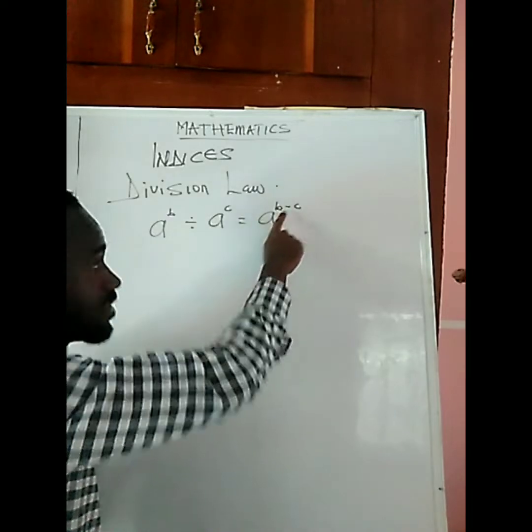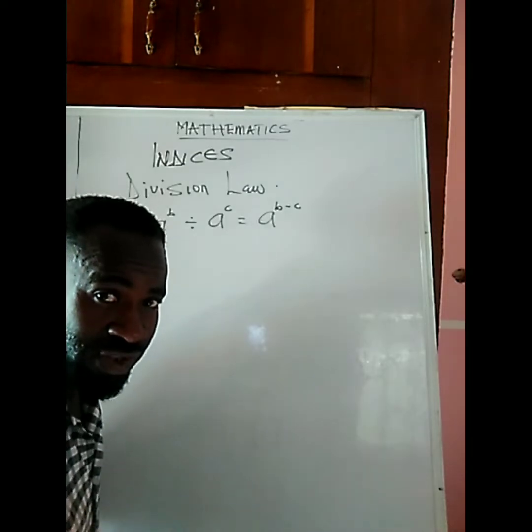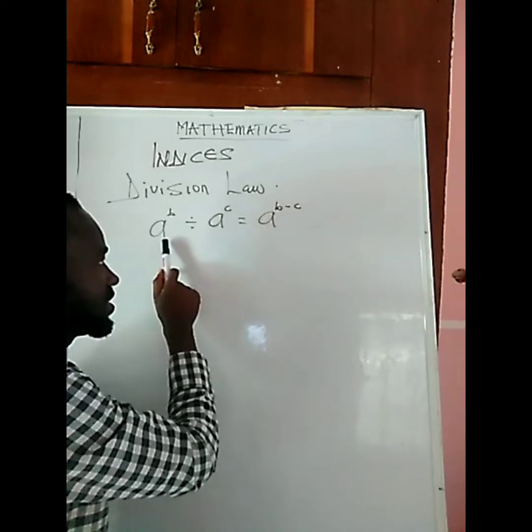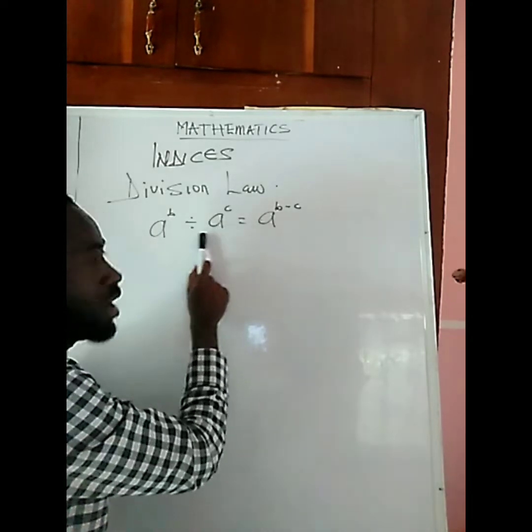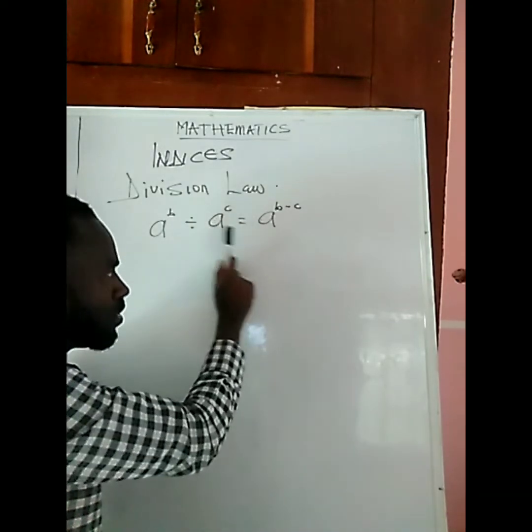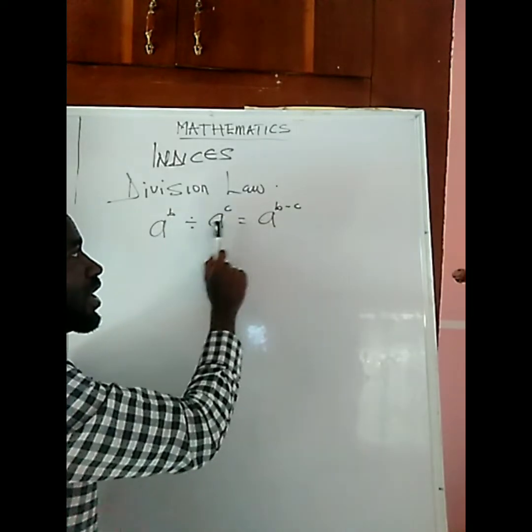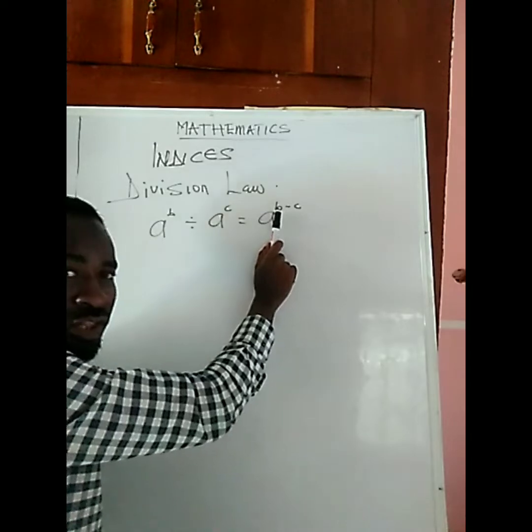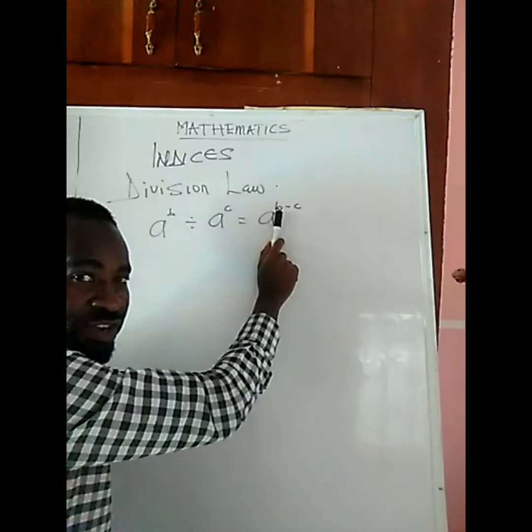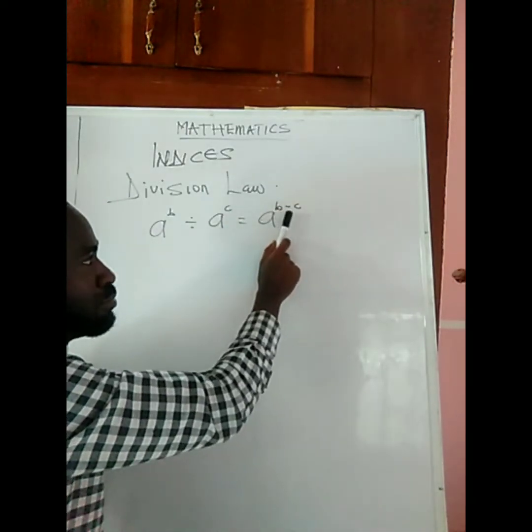The principle is that for this law to apply, the bases must be the same. As long as the bases are the same and we have division, then this law says you should take the difference of the powers, so it's going to be b minus c.